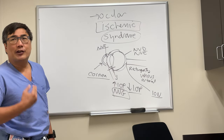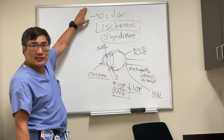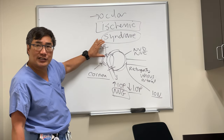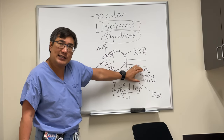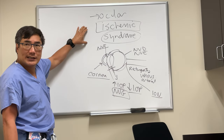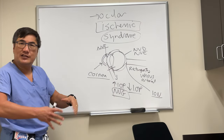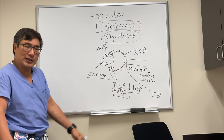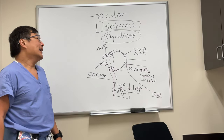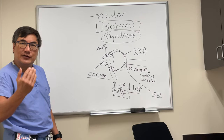Ocular ischemic syndrome is ischemia to the entire eye — front, middle, and back — manifesting as corneal edema, glaucoma, hypotony, neovascularization of the iris and retina, arterial or venous ischemic disease, and ischemic optic neuropathy. Usually it's from proximal carotid disease, but it can also be ophthalmic. The usual suspects for causes include inflammation or vasculitis, like giant cell arteritis in elderly patients or Takayasu arteritis in young patients, or occlusive disease from a hypercoagulable state or thrombus.